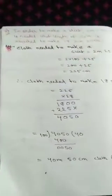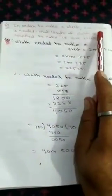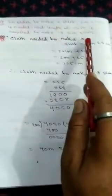Next question. Question number 8. Now in order to make a short, 2 meters 25 centimeters is needed. What length of cloth is required to make 18 such shorts?